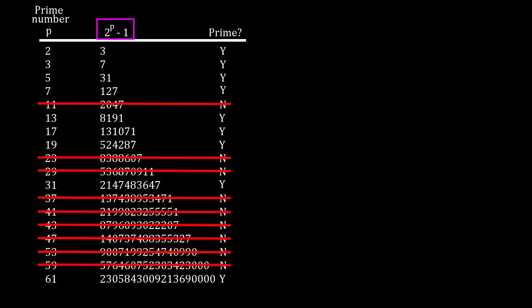Only if 2 to the power of p minus 1 is prime will the input prime p generate a perfect number using Euclid's formula. Unfortunately, there isn't a formula to tell us which primes will work. You need to trial every prime number.